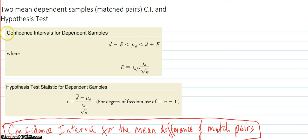So we have our confidence interval design, the usual design here, and we have our error term. In hypothesis test we have our t-value design and our degrees of freedom.